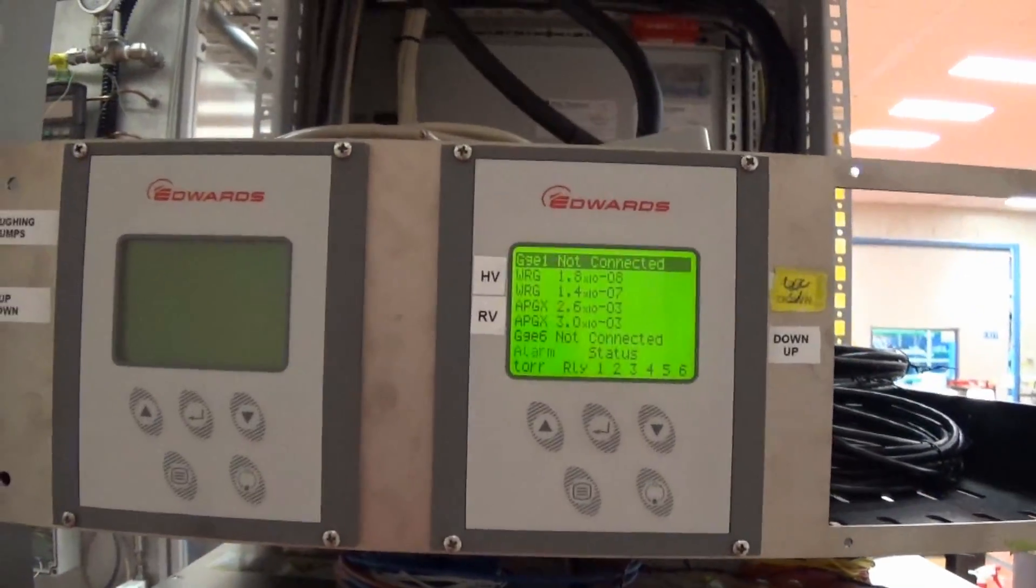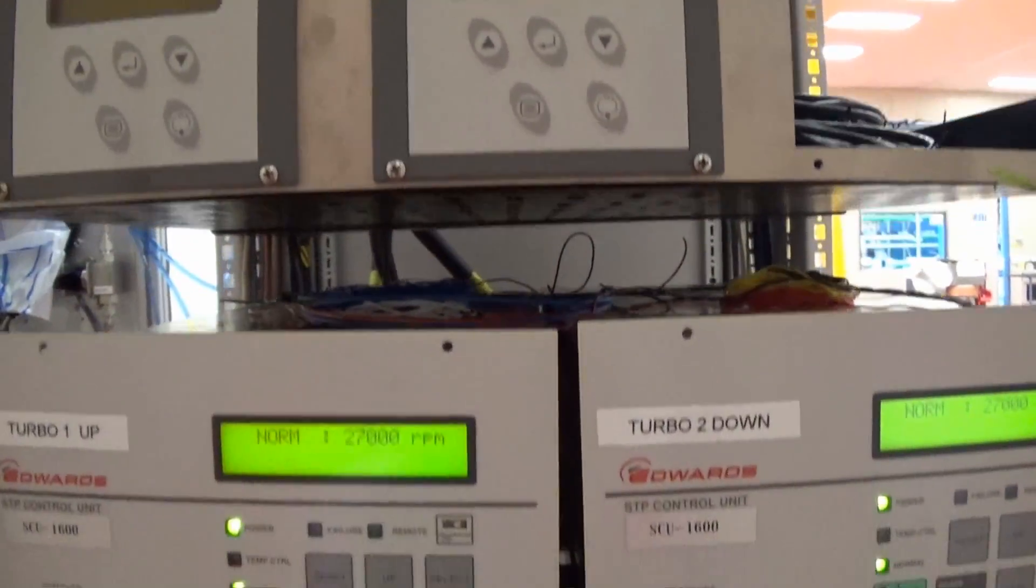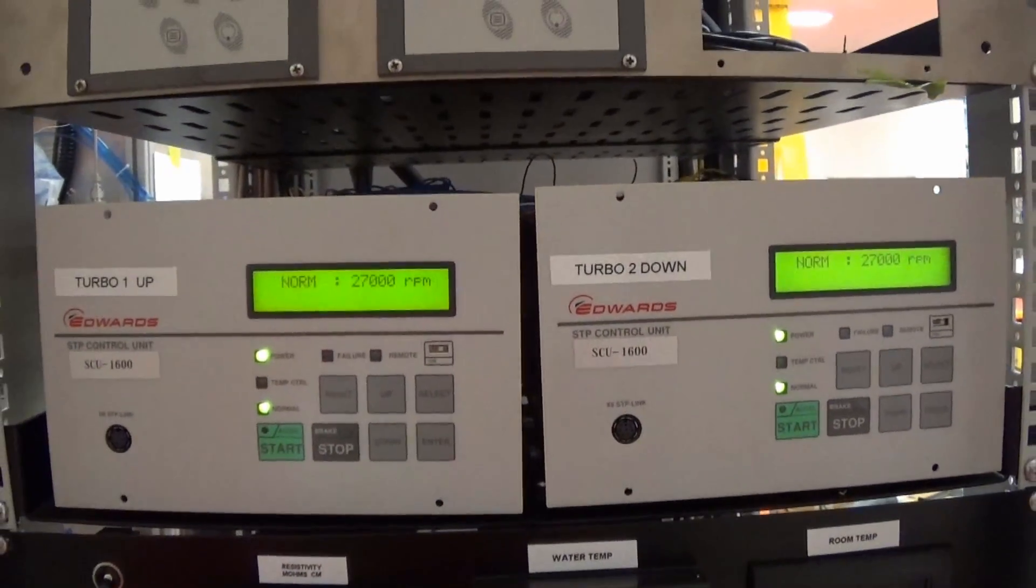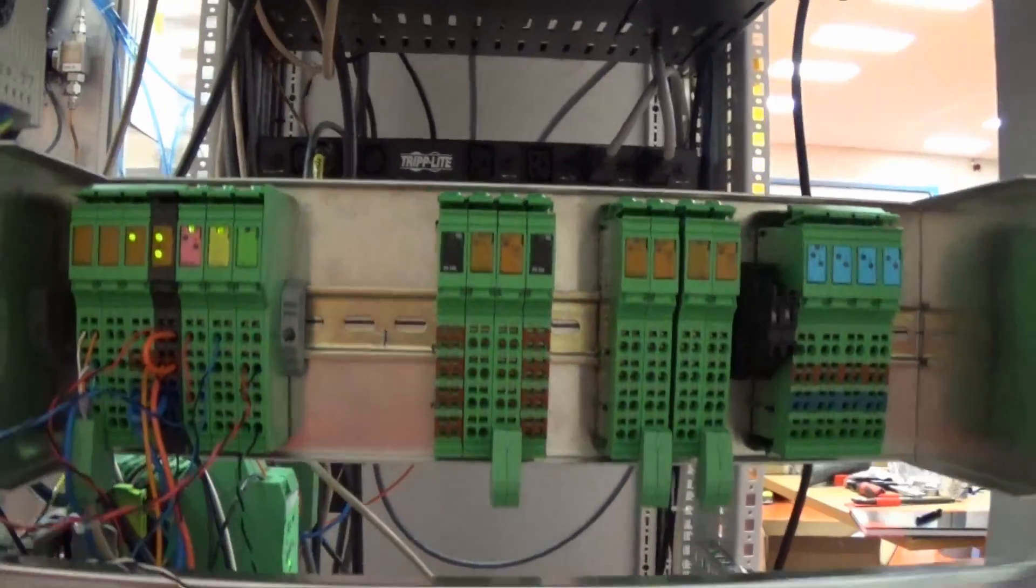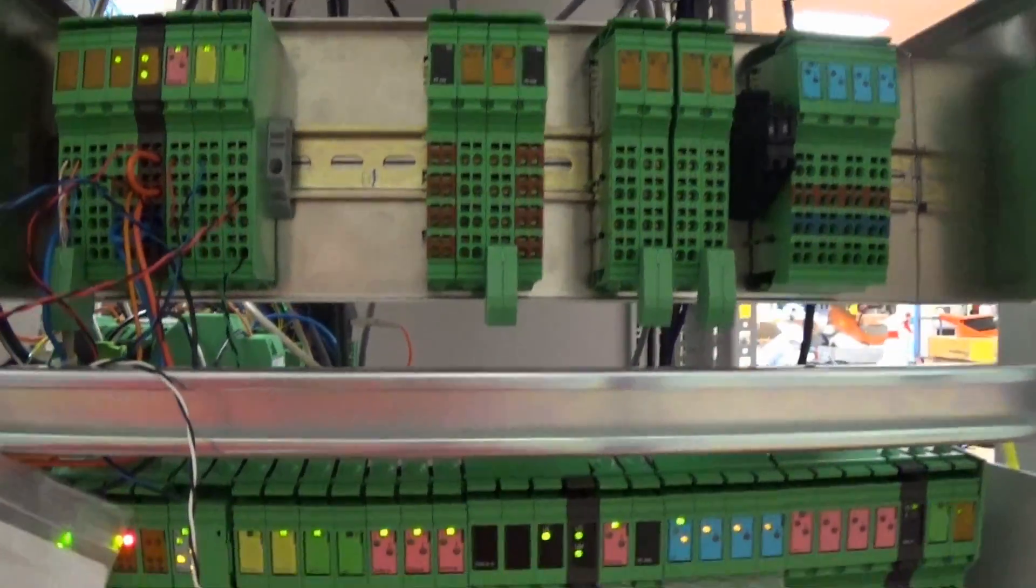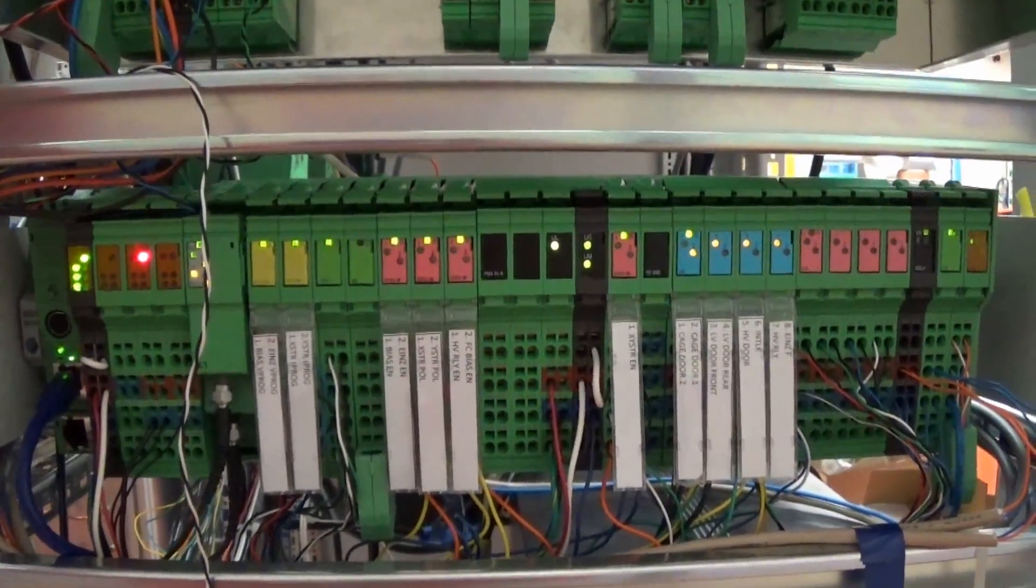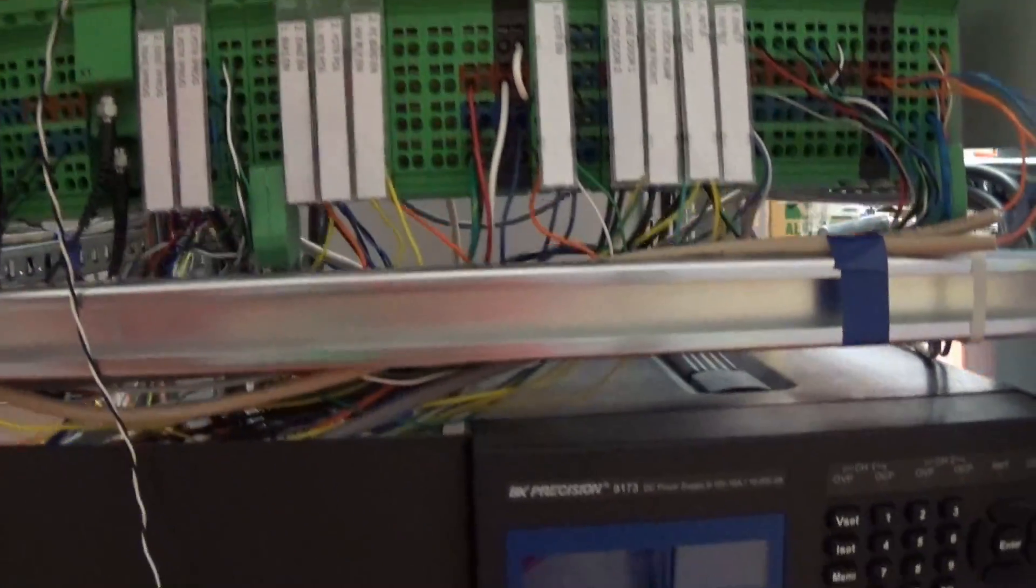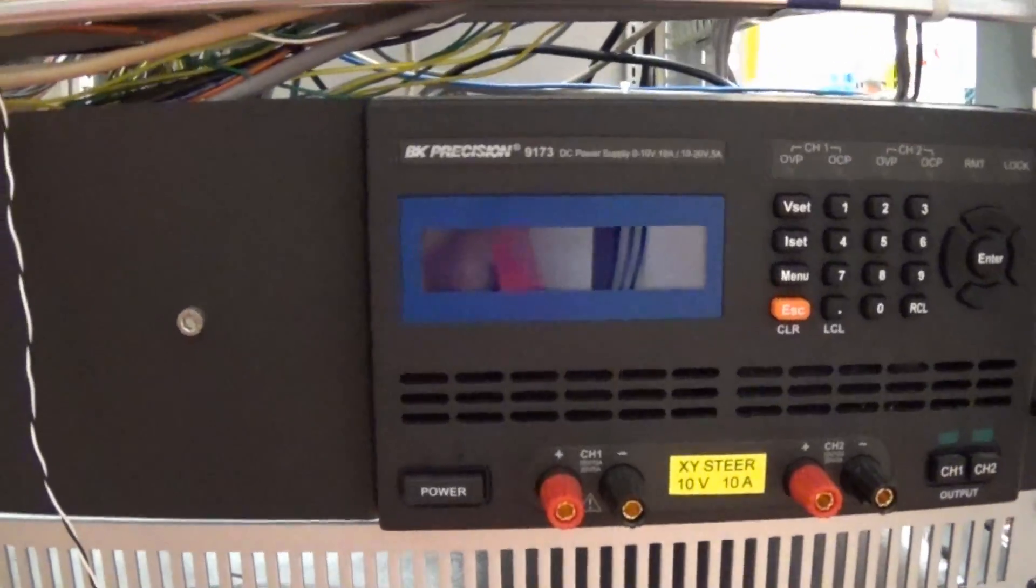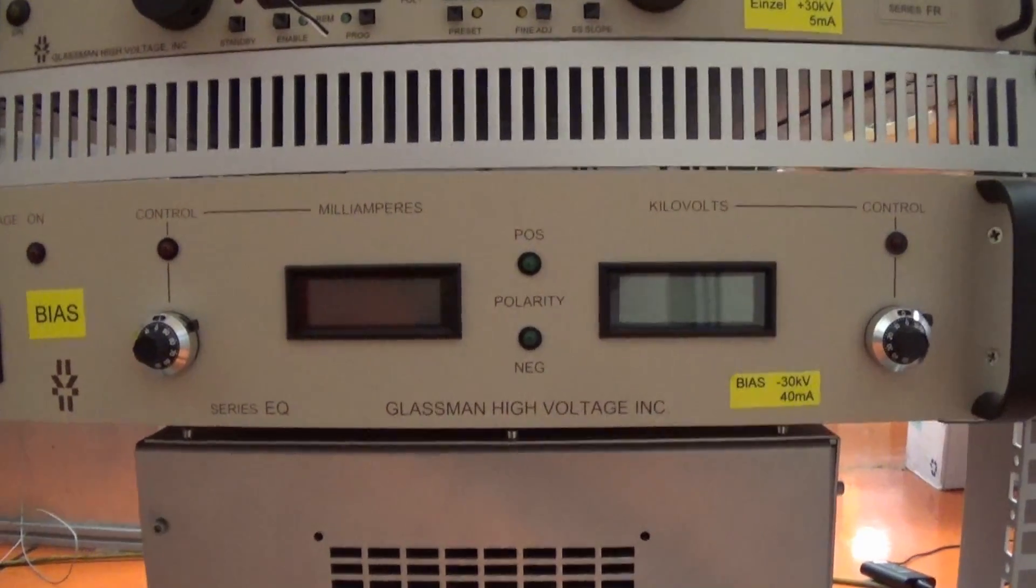So this is the gauge controller. We have to monitor the vacuum system. Down here are the two turbo pump controllers. I'll show you the pumps in a minute. And down here are the PLCs. And our main PLC here. This one is plugged into a computer so we can monitor what's going on. And another power supply. And then two more high voltage power supplies. And this bottom power supply here, this is the one that provides the 30,000 volts.